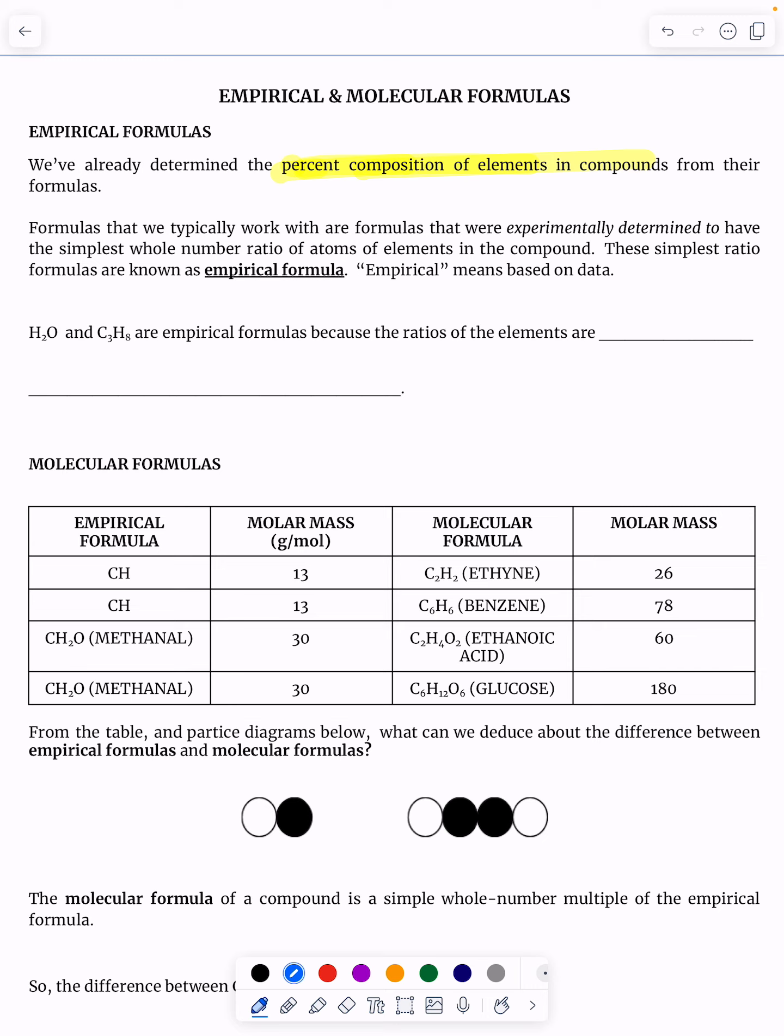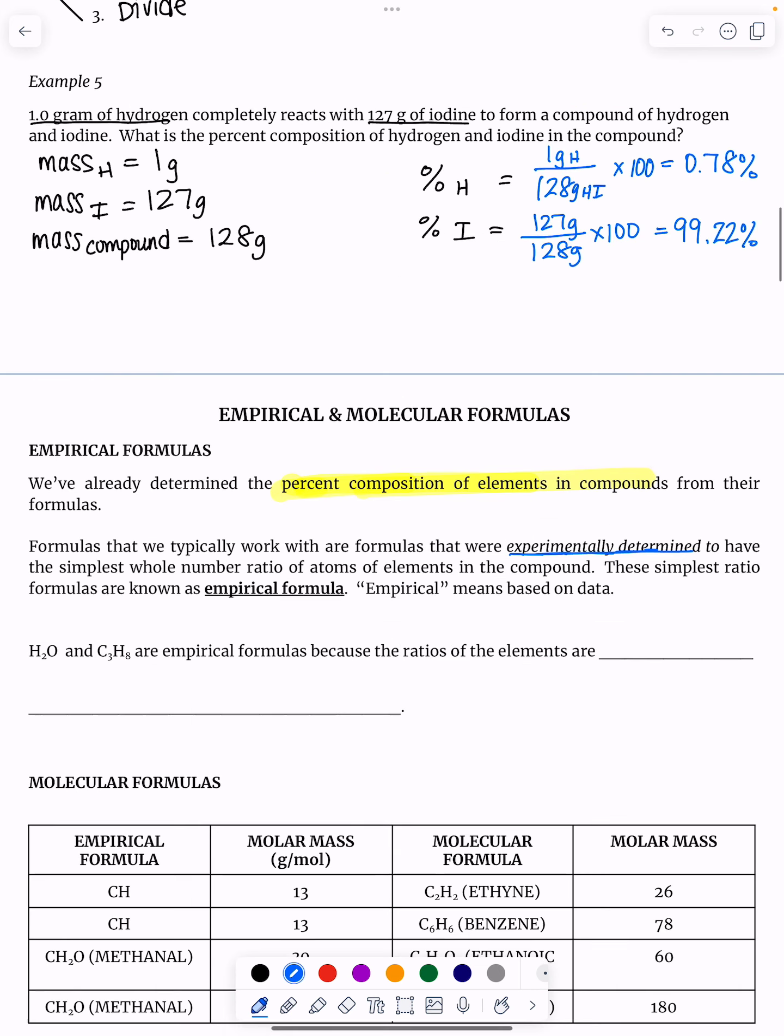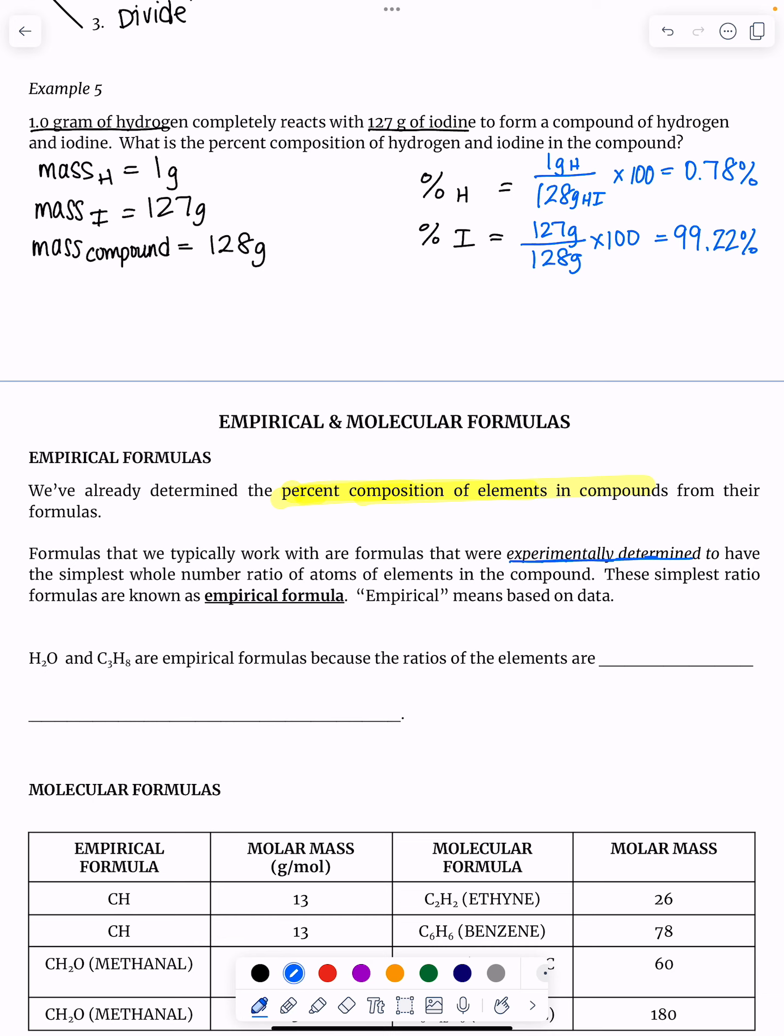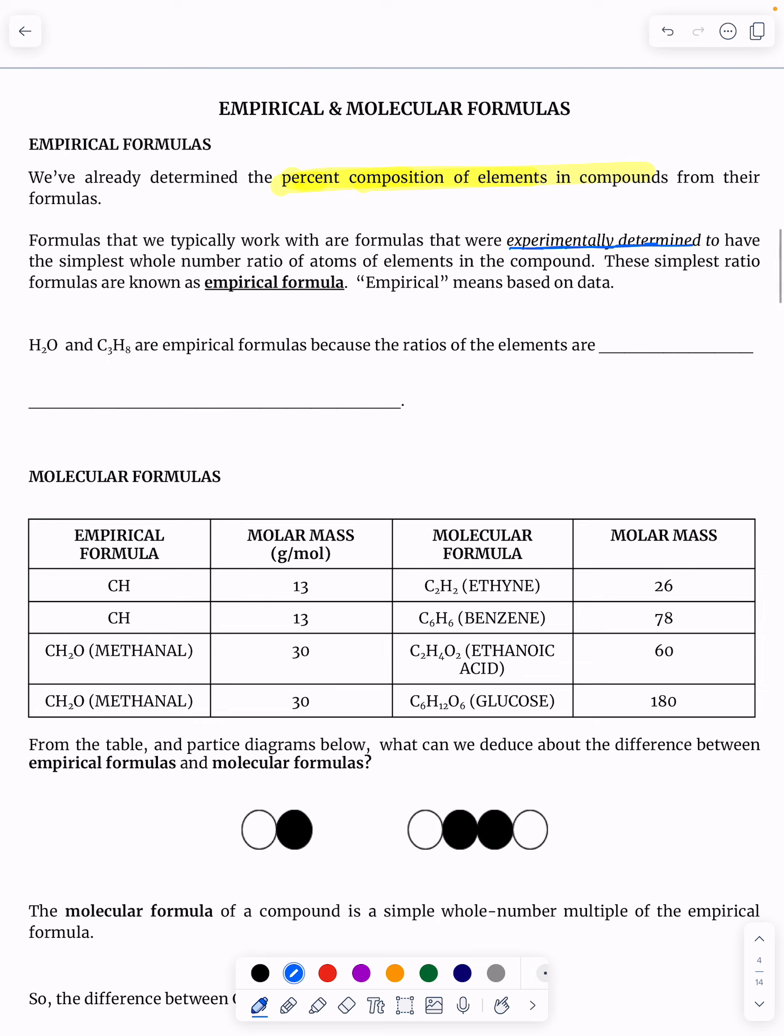So formulas that we typically work with are formulas that were experimentally determined. Like we were able to determine from an experiment that the percentage of hydrogen was 0.78% and the percentage of iodine was 99.22%. This simplest whole number ratio of elements in a compound is known as an empirical formula. And empirical means based on data. Know that for a future unit test. Empirical means based on data.